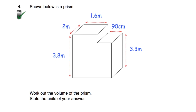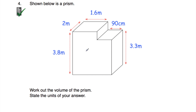Let's look at question number 4. We have an L-shaped prism that is 2 metres long, and we've been asked to work out the volume and state the units. Our measurements are 3.8 metres, 2 metres, 1.6 metres, 90 centimetres, and 3.3 metres. I'm going to convert the 90 centimetres into metres by dividing by 100, so that's 0.9 metres. So all measurements are now in metres: 3.8, 2, 1.6, 0.9, and 3.3.